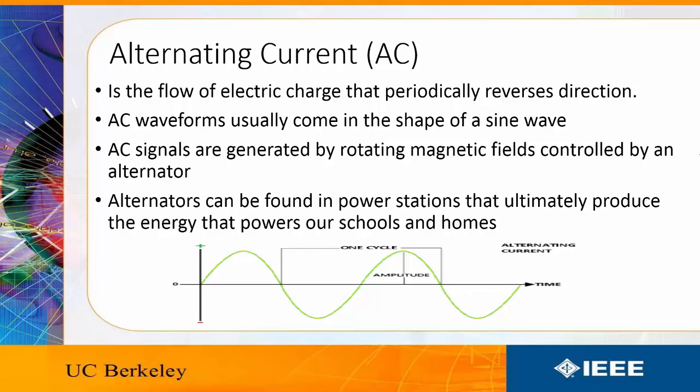AC waveforms usually come in the shape of a sine wave. And AC signals are often generated using alternators, which create these AC signals by rotating magnetic fields in power stations or other energy generating stations.